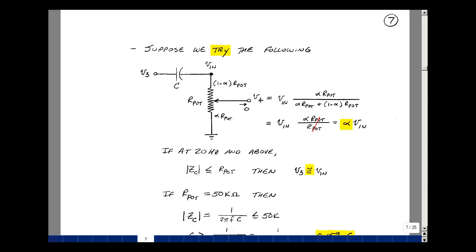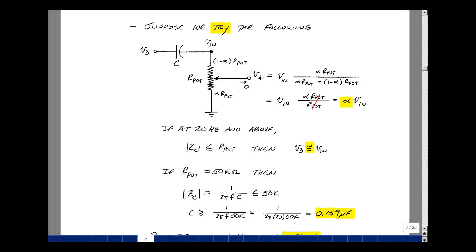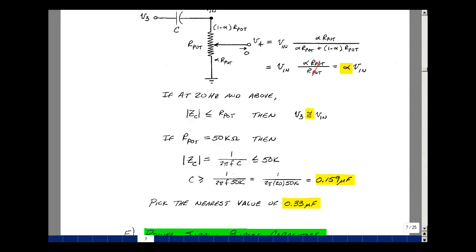I want to pass the audio range, which starts at about 20 hertz. The impedance of this capacitor needs to be smaller than the pot resistance once I get to 20 hertz. We're going to use a 50k pot in lab. The magnitude of the impedance is 1 over 2 pi f, and I want that less than 50,000. Solving for C, I get C is greater than or equal to 1 over 2 pi f times 50k. At 20 hertz, we're looking at about 0.159 microfarads. The nearest value we have is 0.33 microfarads.